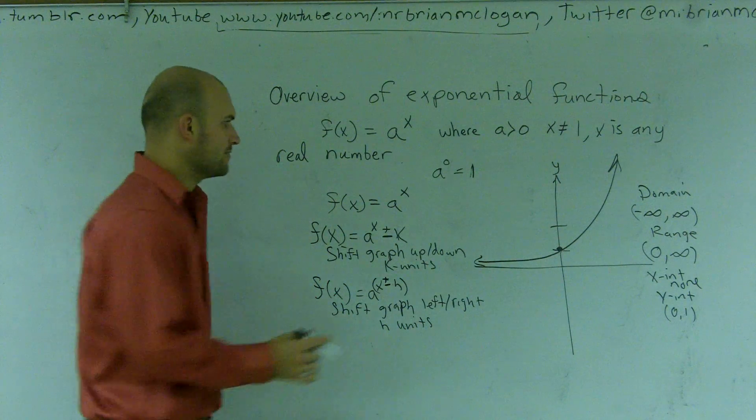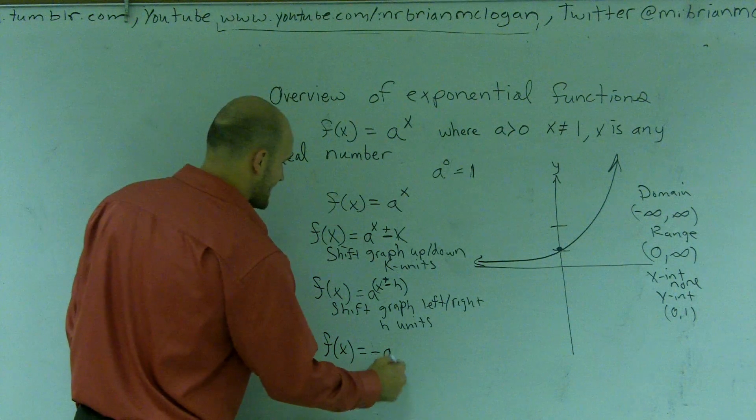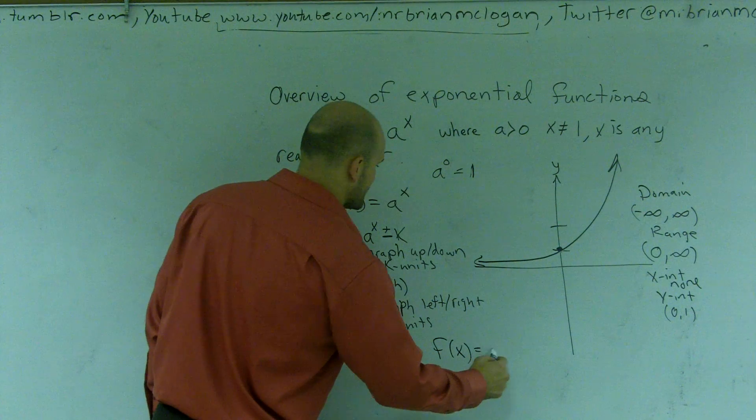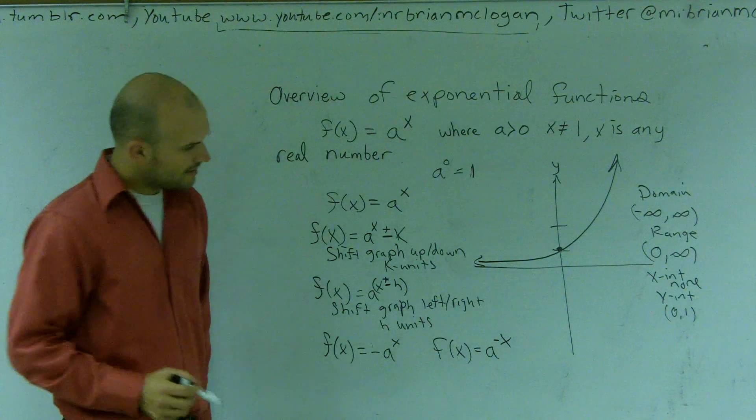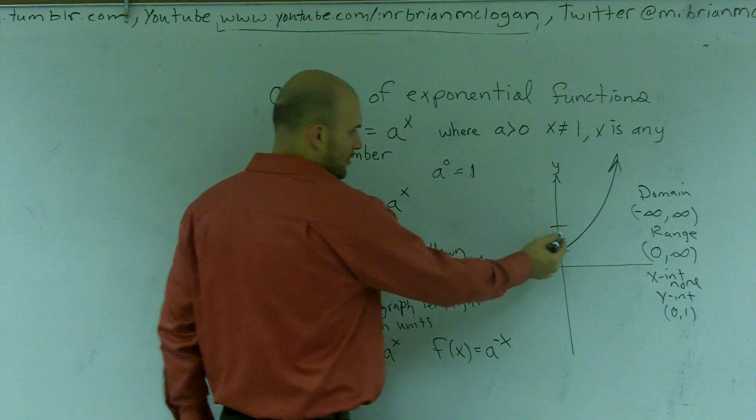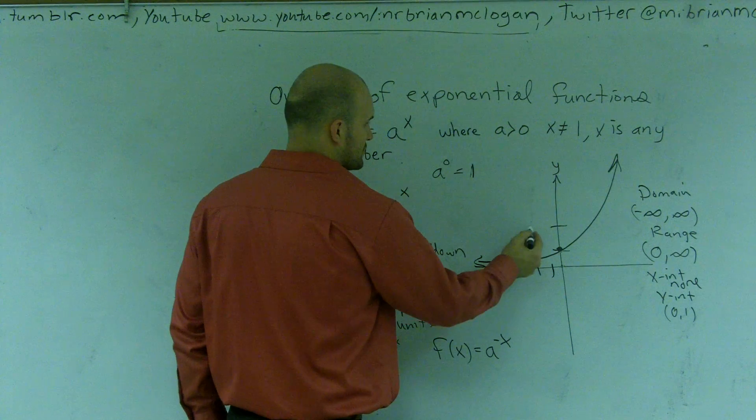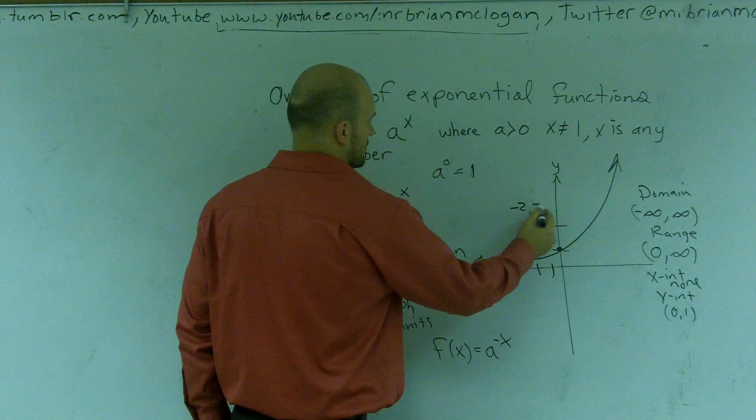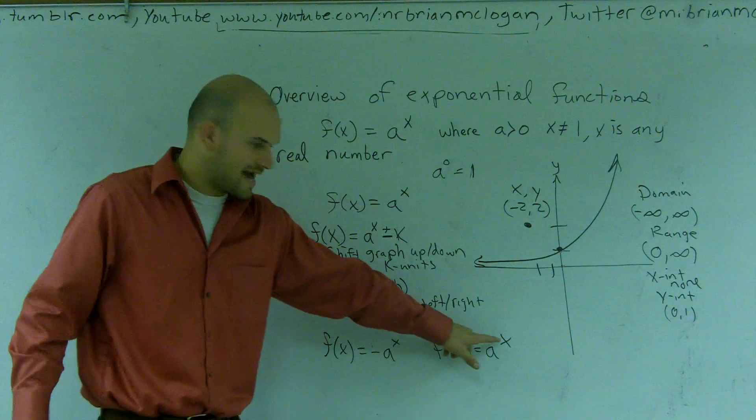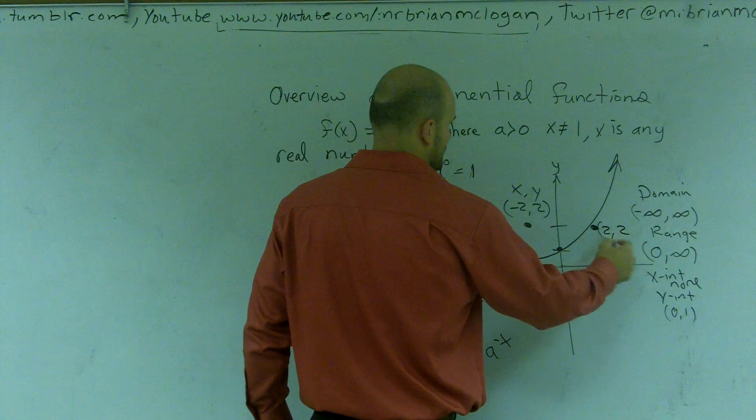Now there's two more functions we need to talk about. We have f of x equals negative a to the x, and we have f of x equals a to the negative x. And it's a really easy way to remember this. If I look at a point, let's look at the point negative 2, 2. Right? Where you have x, y. If I'm going to make my x now negative, it would become this point over here.